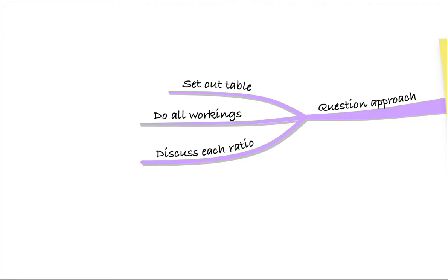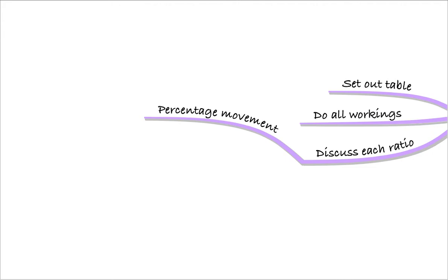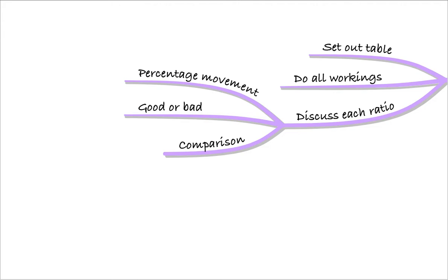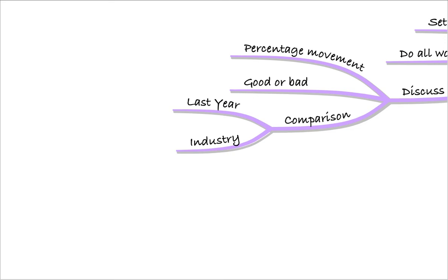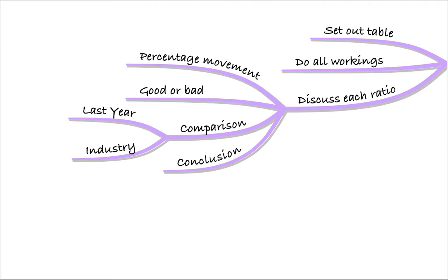So you've got a table, you've got all the workings in it — that will probably get you half the marks. You can then discuss each ratio. That involves percentage movements, saying it's moved by a certain percentage, saying how much that is, and then saying is that good or bad. Then you're comparing. Remember, you can only compare year on year with the same business, or with the industry average or another business in that industry. Those are the only two comparisons you can make. And then draw a conclusion. So that's your question approach.